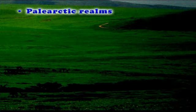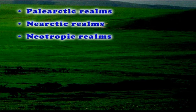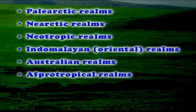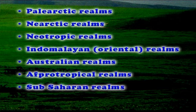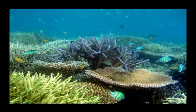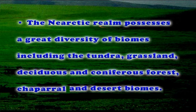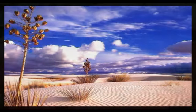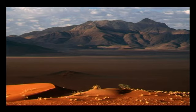The kinds of realms identified in biogeography are: paleo-arctic realm, neo-arctic realm, neo-tropical realm, Indo-Malayan (oriental) realm, Australian realm, afro-tropical realm, sub-Saharan realm, and the oceanian realm. Biogeographical realms are geographical regions out of which particular assemblages of plants and animals evolved and dispersed. The neo-arctic realm possesses a great diversity of biomes including tundra, grassland, deciduous and coniferous forests, chaparral, and desert biomes. The neo-arctic realm has been separated from the neo-tropical by deserts and, until recently, an absence of a land bridge between them.